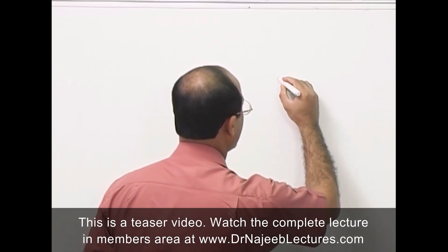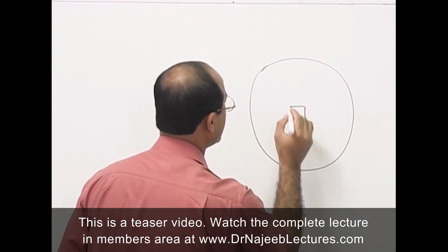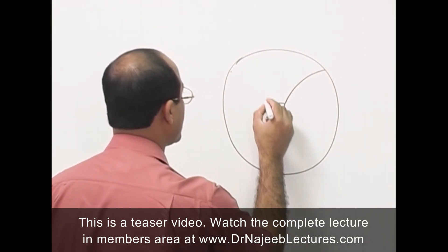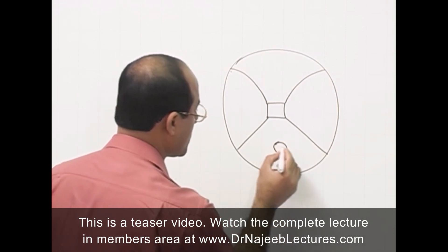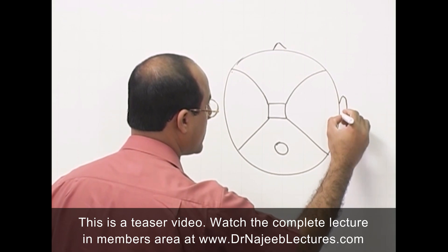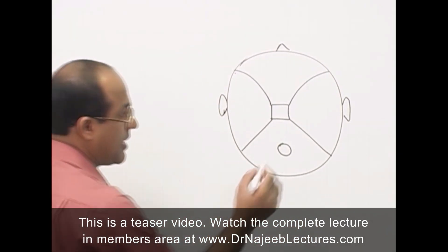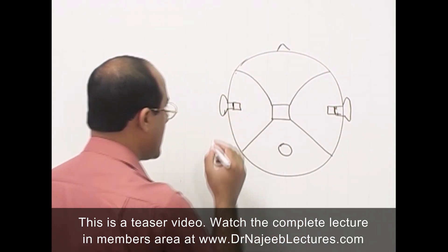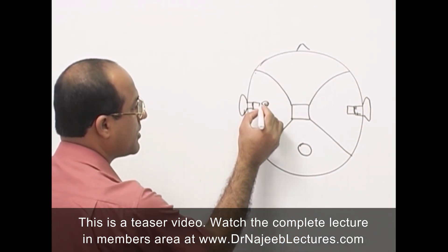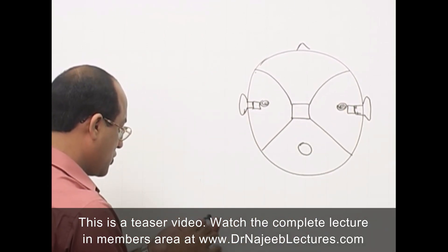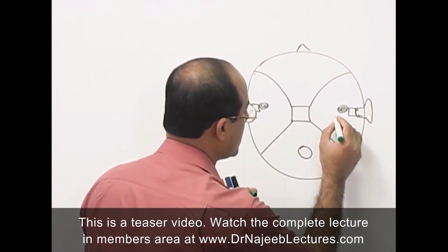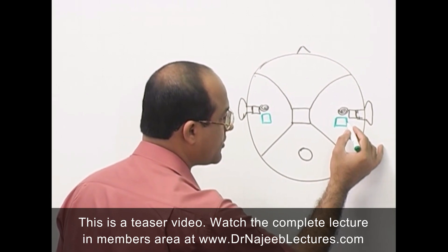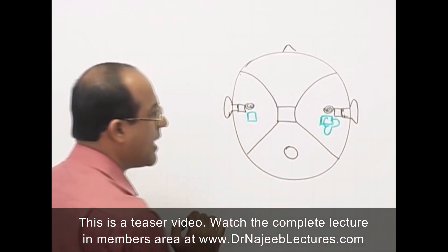As we discussed in the last lecture, here is the cranial cavity with the anterior cranial fossa, posterior cranial fossa with foramen magnum, and middle cranial fossa. There is the external auditory meatus, then the middle ear, and just medial to the middle ear is the cochlear system. Posterior to the cochlear system is the vestibular system — the vestibule — on both sides.